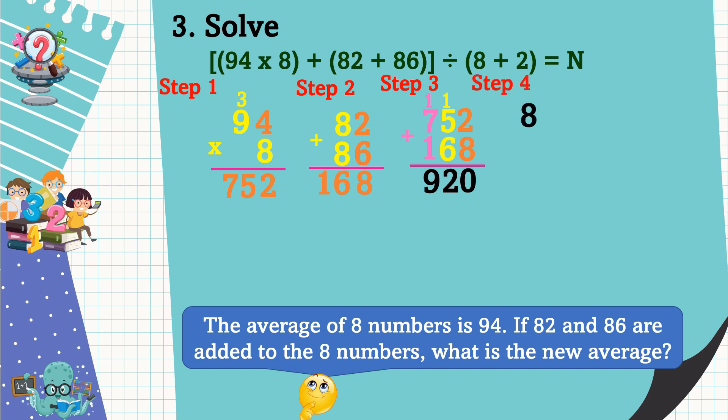For step 4, we're going to add 8 and 2, and the answer is equal to 10. To get the new average, let's divide step 3 by step 4. This is our step 5: 920 divided by 10.